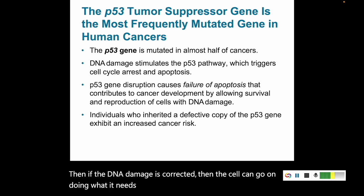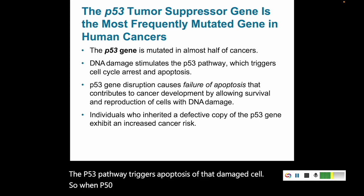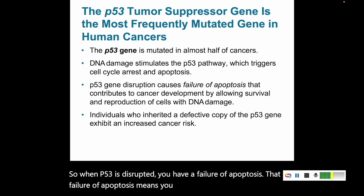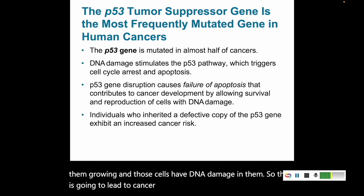If the DNA damage cannot be corrected, the P53 pathway triggers apoptosis of that damaged cell. So when P53 is disrupted, you have a failure of apoptosis. That failure of apoptosis means you have cells not dying, you have them growing, and those cells have DNA damage in them. So that is going to lead to cancer development — it allows survival and reproduction of cells that are damaged.